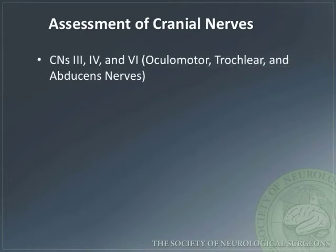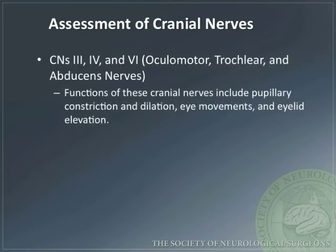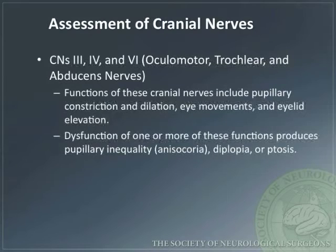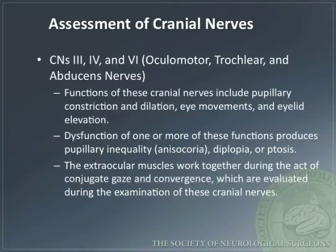Cranial nerves 3, 4, and 6 — the oculomotor, trochlear, and abducens nerves — control pupillary constriction and dilatation, eye movements, and eyelid elevation. Dysfunction of one or more of these functions produces pupillary inequality, or anisocoria, diplopia, or ptosis. The extraocular muscles work together during conjugate gaze and convergence, which are evaluated during examination of these cranial nerves.